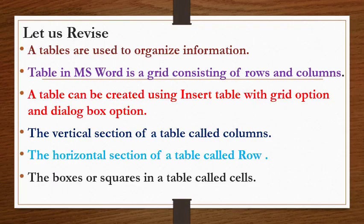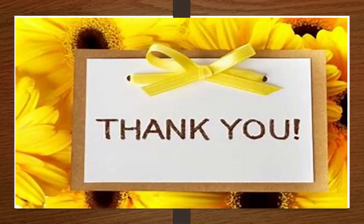Now let us revise whatever we have learned today. Tables are used to organize information. A table in MS Word is a grid consisting of rows and columns. A table can be created using Insert Table with grid option and dialog box option. The vertical section of a table is called columns, the horizontal section is called rows, and the boxes or squares in a table are called cells. I hope you have understood today's concept. Thank you.